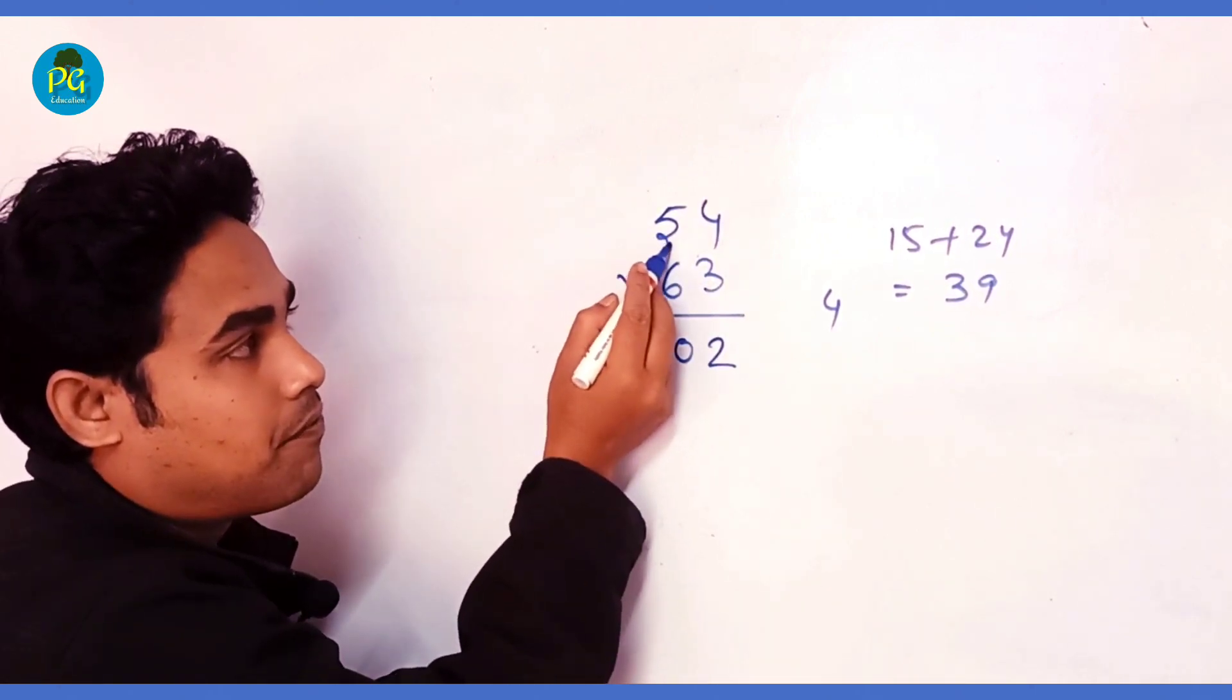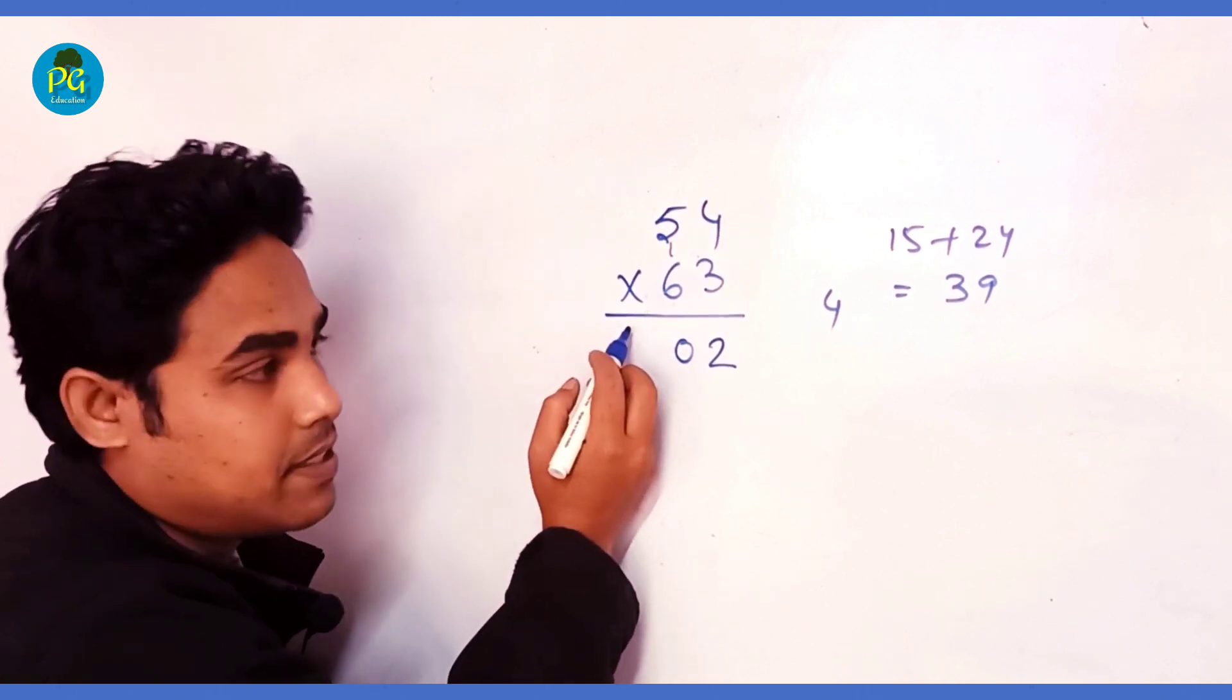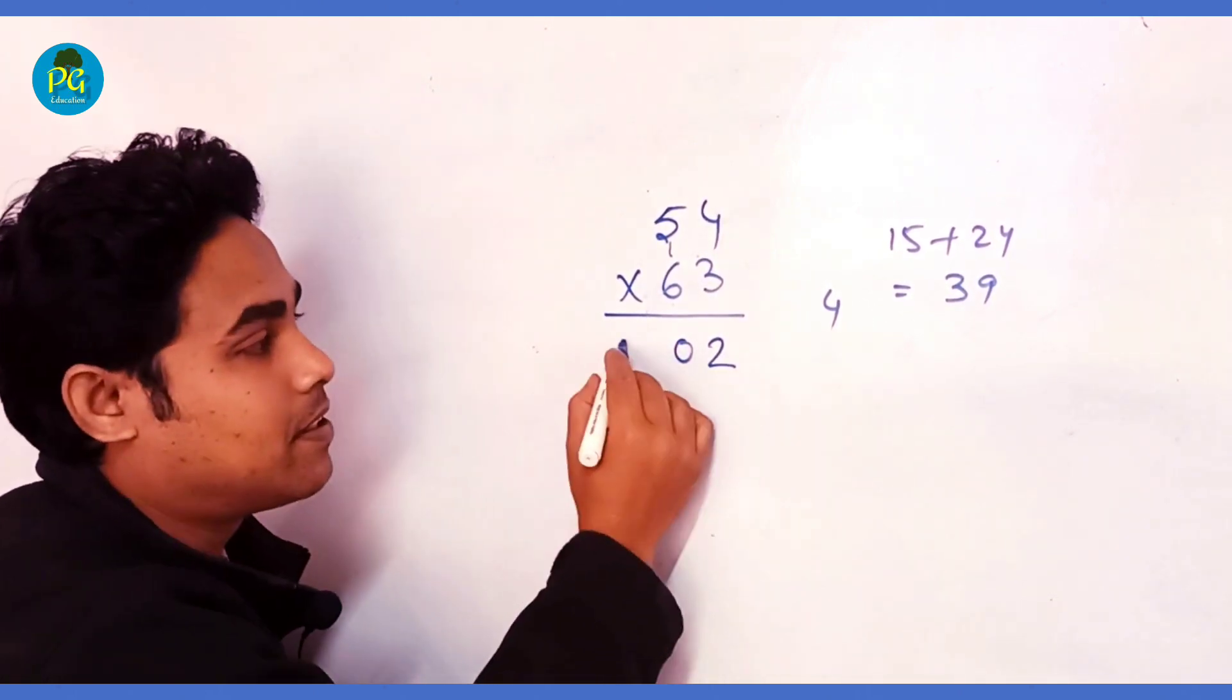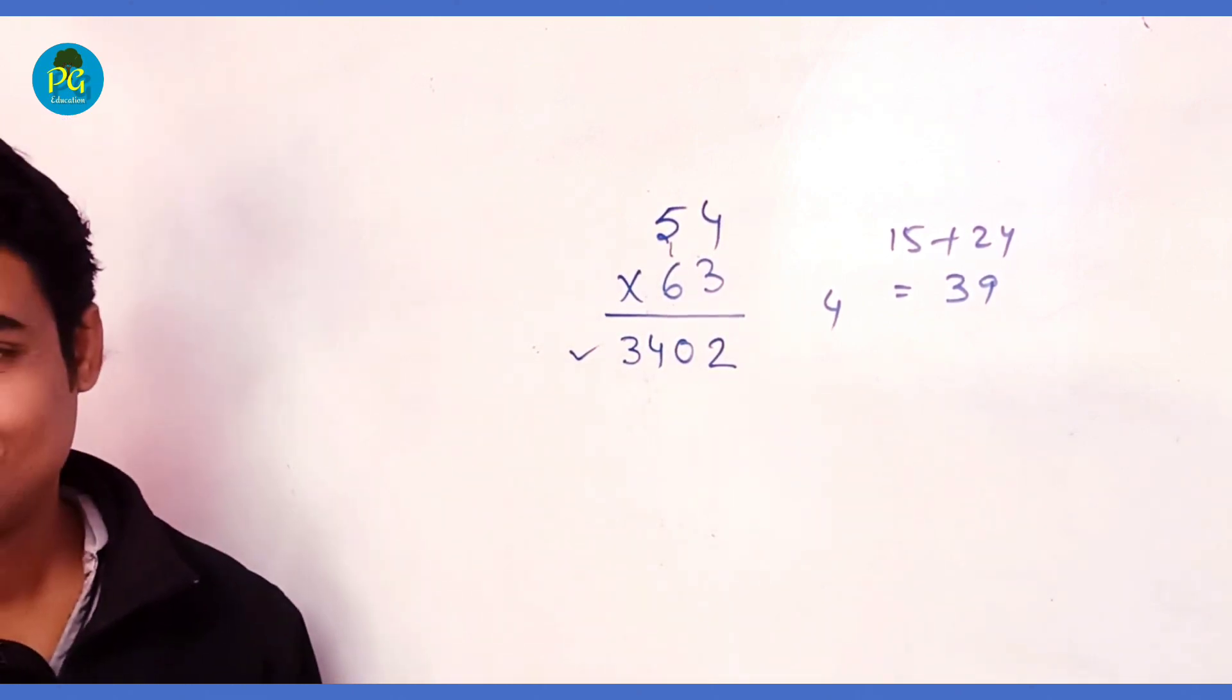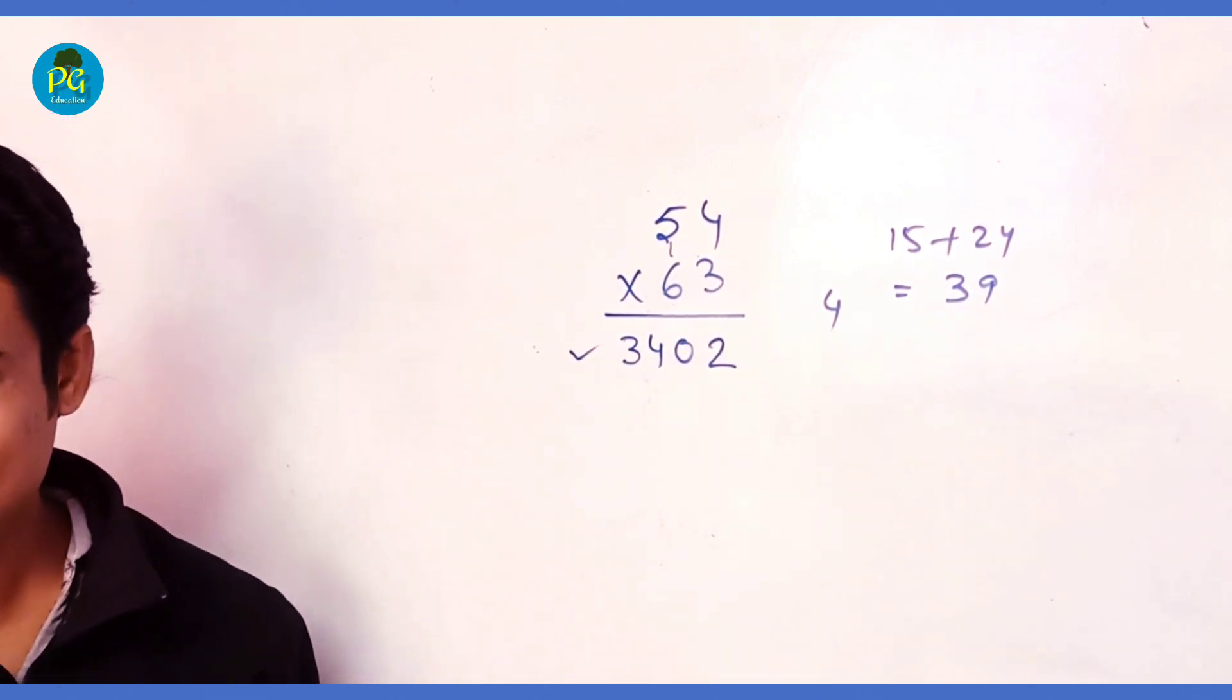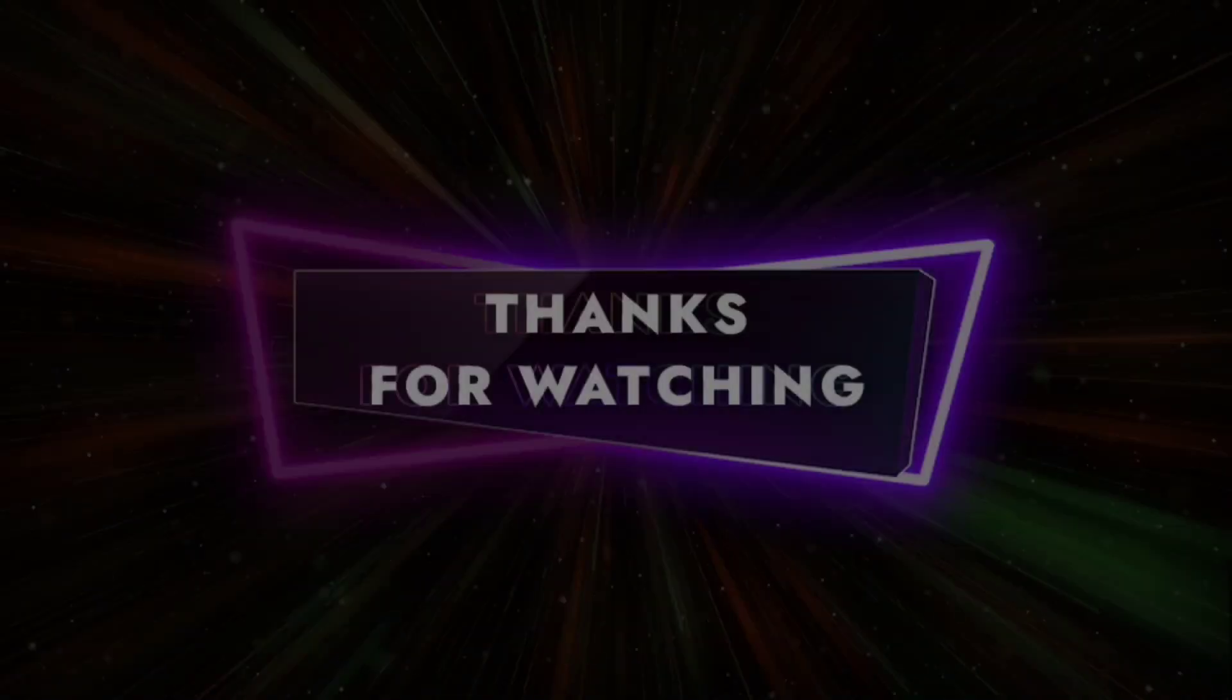Now we will multiply this two-digit. 5 times 6 is 30 plus 4. This is our required answer. Do you understand? Yes sir, okay.